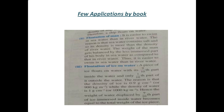Sea water contains salt, so its density is more than the density of river water. The weight of the man gets balanced by the less immersed part of his body in sea water as compared to that in river water. Thus, it is easier to swim in sea water than in river water. The next application is the floatation of ice on water.